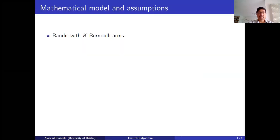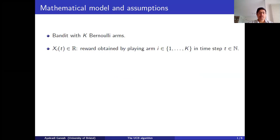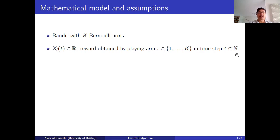We'll start by recalling the model and setting out the assumptions before describing the algorithm. We consider a bandit with k Bernoulli arms. We will denote by x sub i of t the reward we get if we play arm i at time step t. This will be a real number — it could be negative and typically it will be random. And time is discrete; it takes values in the integers.